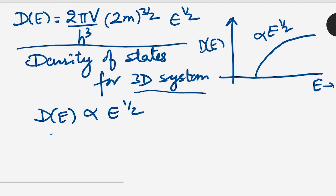For lower energy levels the square root is approximately equal to zero, and as we increase the energy the plot goes like this — it's a half parabola, E to the power half. So this is our plot for density of states. It's simple.